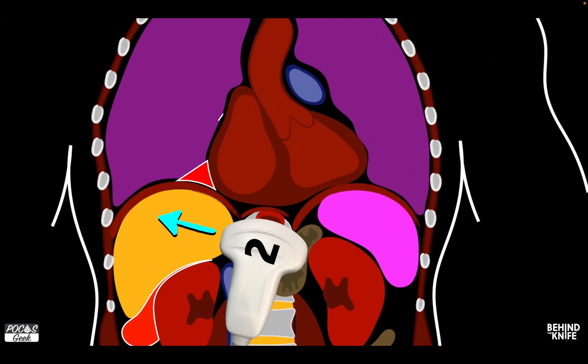After viewing the right upper quadrant, we want to move over to the sub-xiphoid region. We're going to rotate that probe and have our probe indicator towards the patient's right. We're going to use the left lobe of the liver and direct our probe up towards the left clavicle, and we're going to look for fluid to collect between the right side of the heart and the left lobe of the liver.